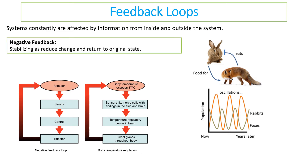Negative feedback stabilizes a system by reducing change and returning it to its original state. An example is predator-prey populations: if rabbit numbers dip, fox numbers dip due to lack of food; fewer foxes means rabbit numbers increase; then fox numbers follow and increase; then rabbit numbers decline again. One follows the other in a stable equilibrium cycle.